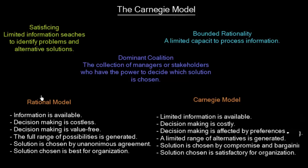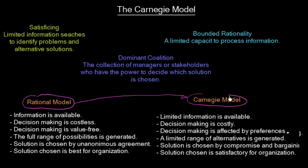In the previous video we talked about the idealistic rational model of organizational decision making. In this video we are going to build on this knowledge and discover the Carnegie model, which is a realistic model that gives you an idea of how organizations and managers make decisions. We will compare these two models and discover three new terms: satisficing, bounded rationality, and dominant coalition.